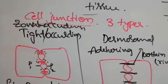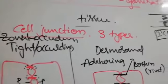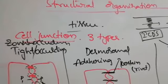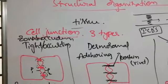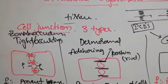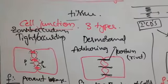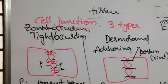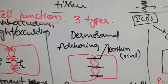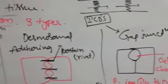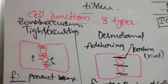Tissues are combined with a cementing substance called junctions. In our body, three types of cell junctions are present: the first is the tight junction, the second is the desmosomal junction, and the third is the gap junction.